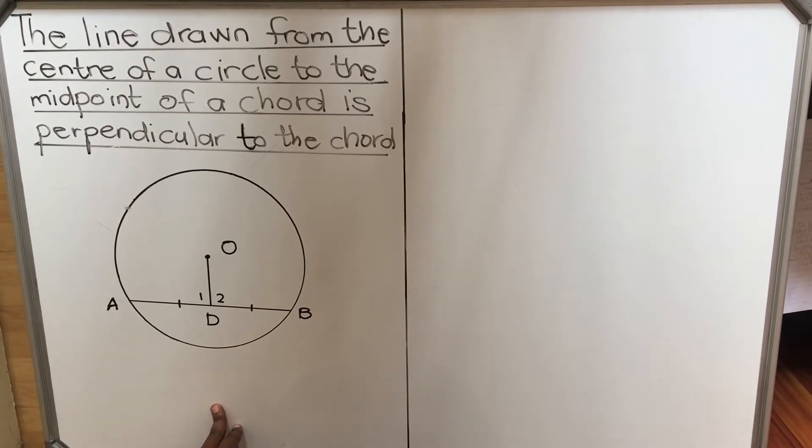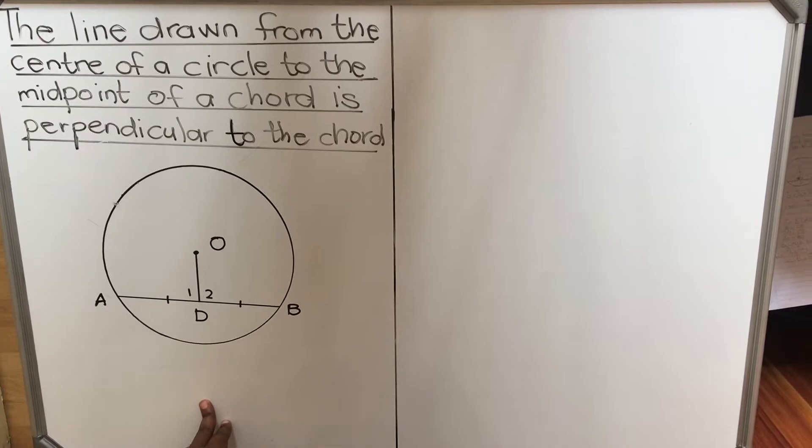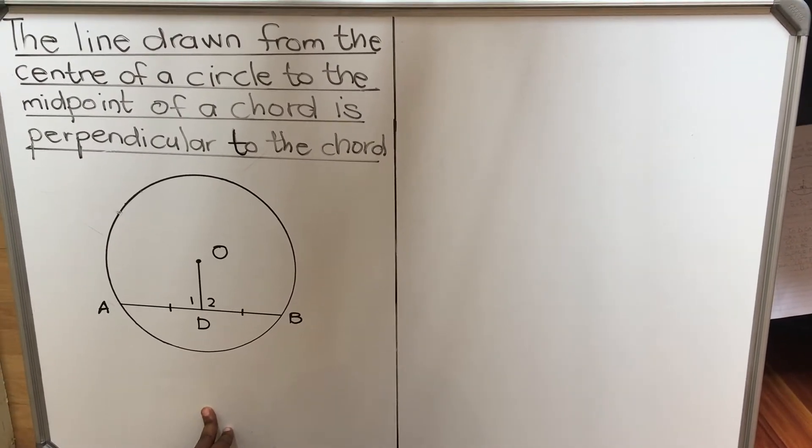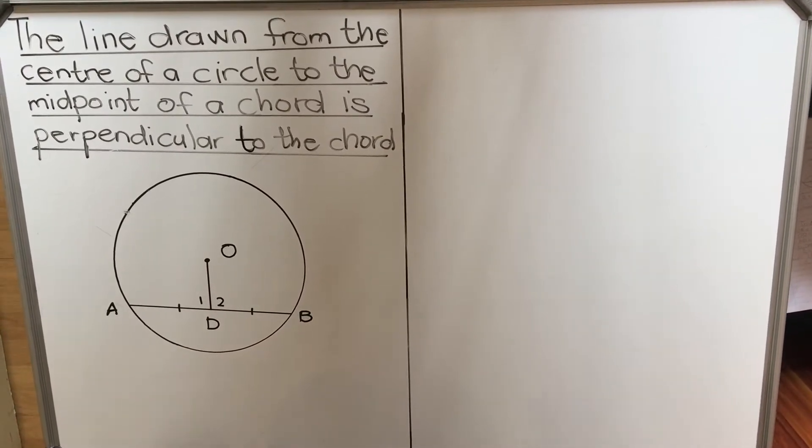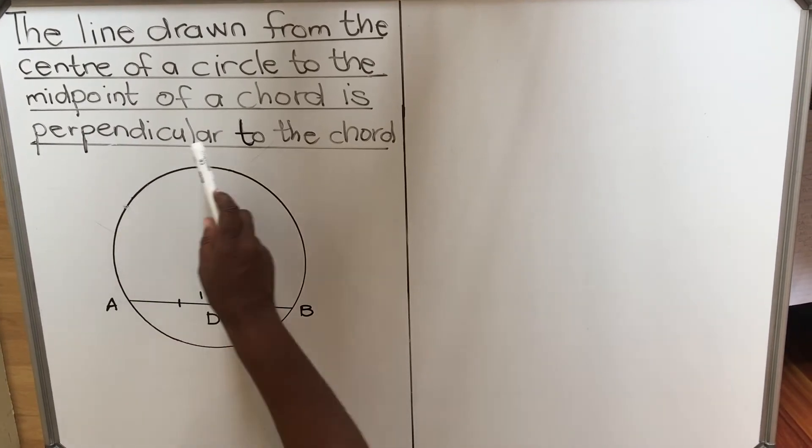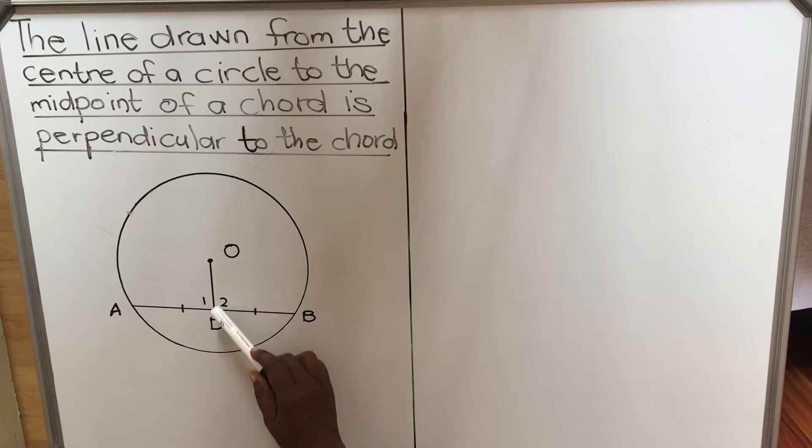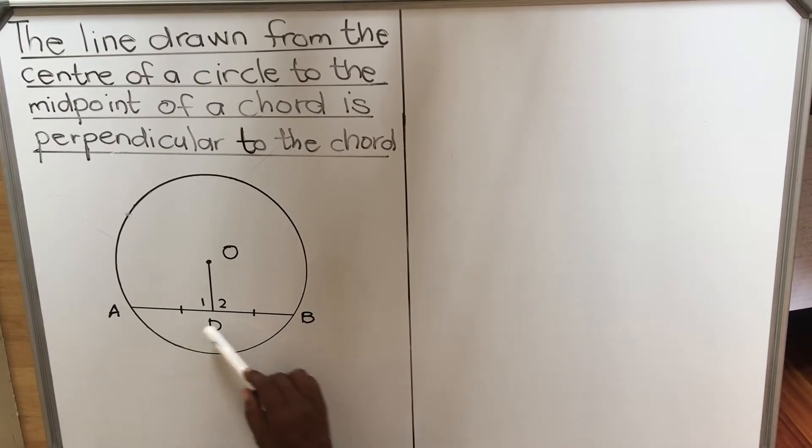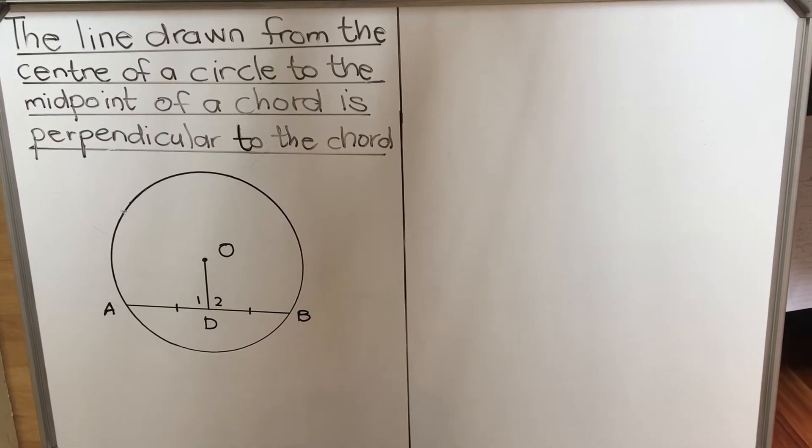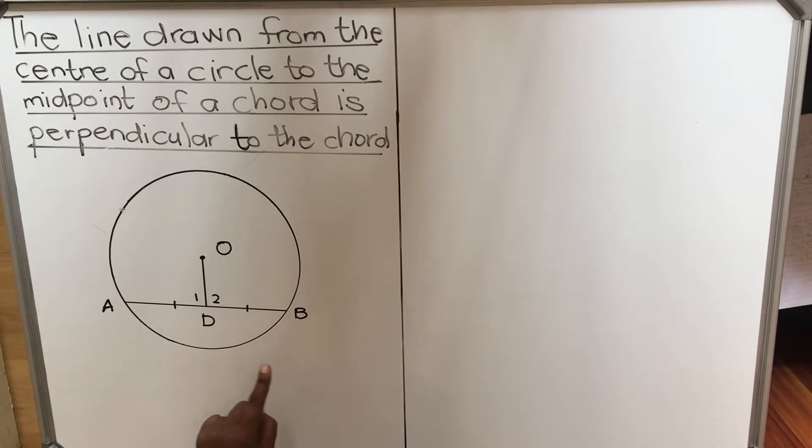It says the line drawn from the center of a circle to the midpoint of a chord is perpendicular to the chord. So you're going to prove this part that is perpendicular. You'll be given the drawing of a line drawn from the center to the midpoint. That's why you have these things, because it's to the midpoint, AD is equal to DB.